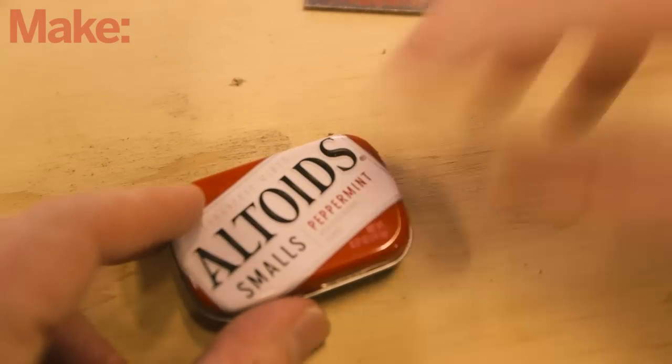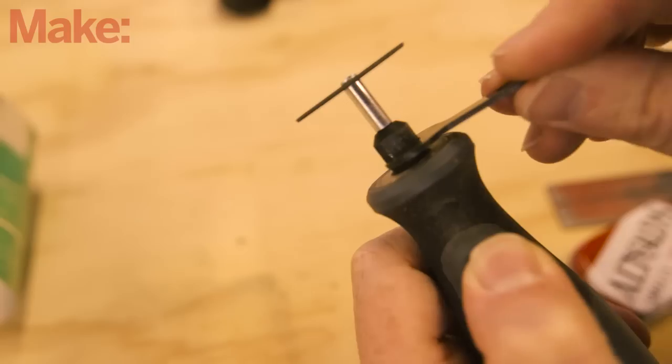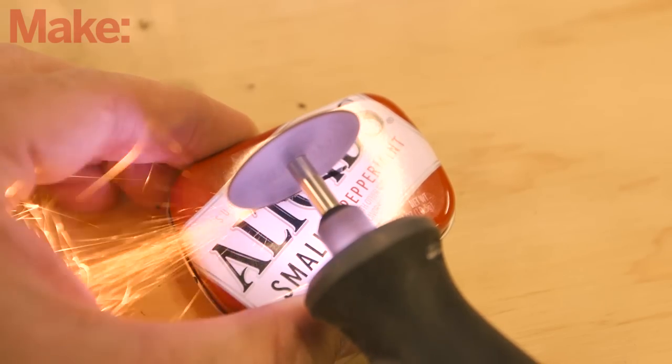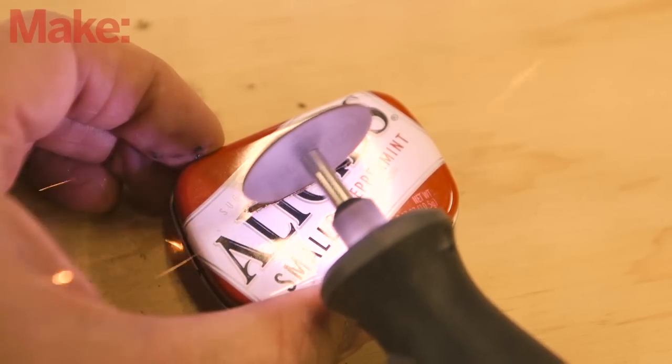When the JB weld has cured, you can cut the slot for the wick. Using a rotary tool, cut a slot in the lid of the small mint tin. The slot should run roughly 2 centimeters long by 2 millimeters wide.